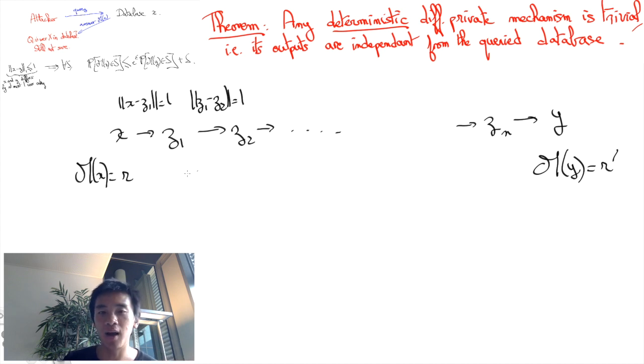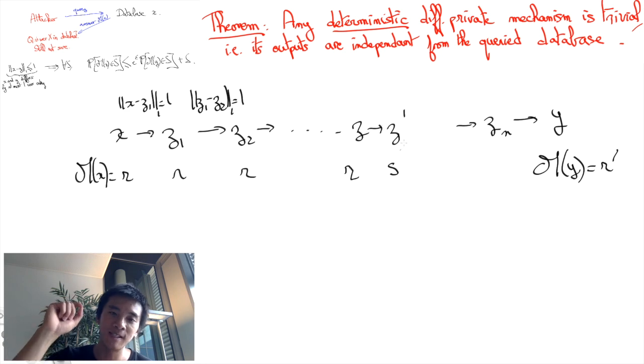And since at one hand we had M of X equals R, and at the other hand we have M of Y equals R', and since R is different from R', there must be some switch here, at which point the result flipped and stopped being R. We call S what it became, and thus this means that when we moved from the database Z here to the database Z' here, then the value of the mechanism has completely changed,